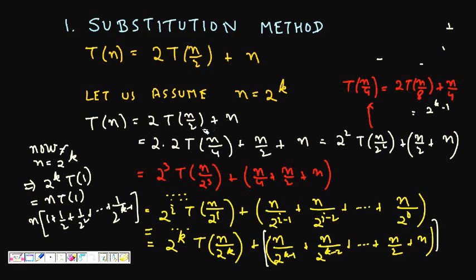We expand T(N/2): it can be written as 2T(N/4) + N/2. Replacing N by N/2 and substituting back, we get T(N) = 2·(2T(N/4) + N/2) + N = 2²·T(N/2²) + N/2 + N.